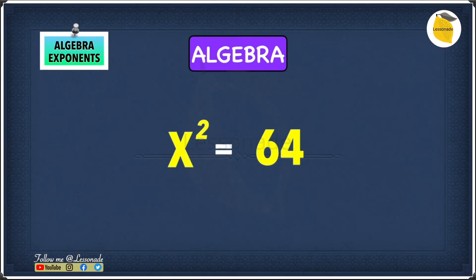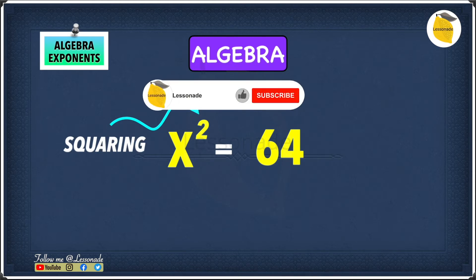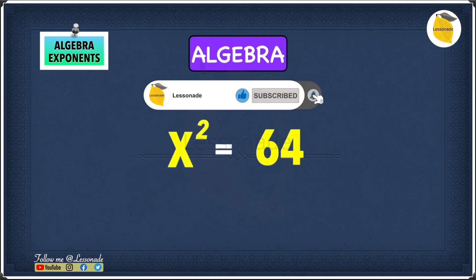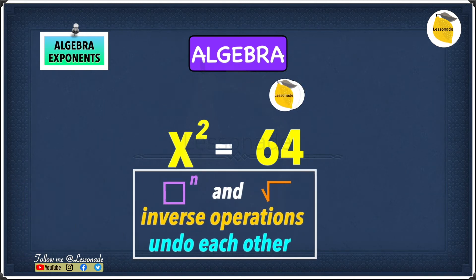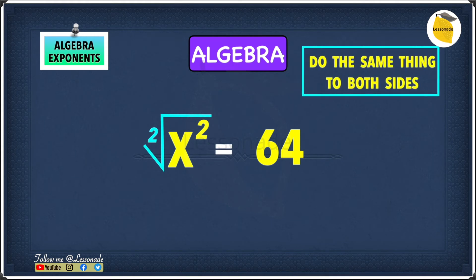Now let's look at this example: x squared equals 64. As you can see, we are squaring x, so we have to undo this a bit differently. We know that exponents and roots are inverse operations — they undo each other. In this case we have x squared, and the square is an exponent, so to undo it we use a root — specifically a square root. Remember, you need to do the same thing to both sides for the equation to be balanced, so square root the other side as well.